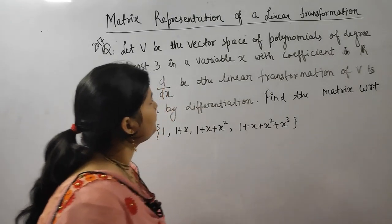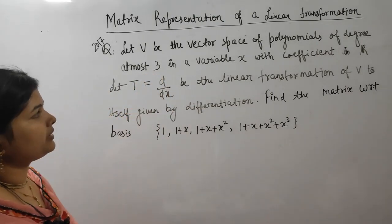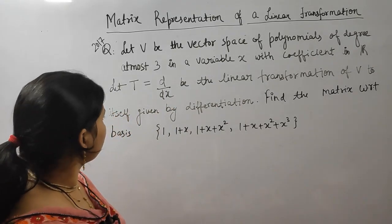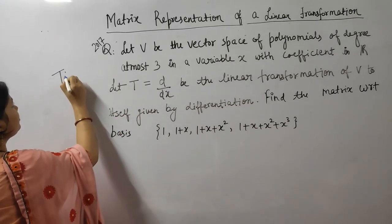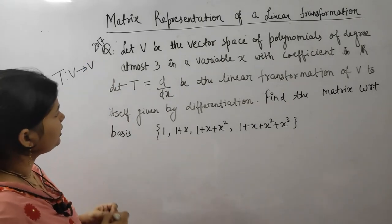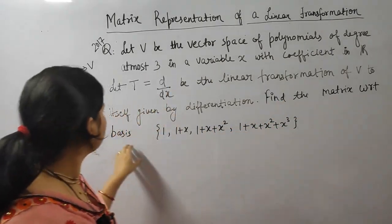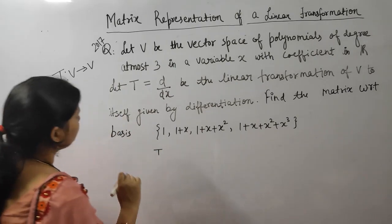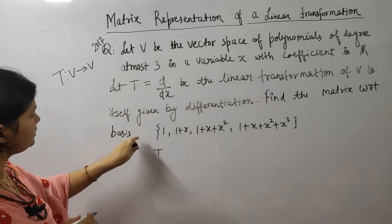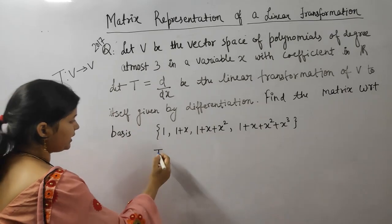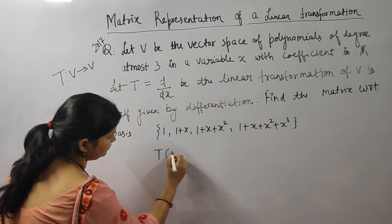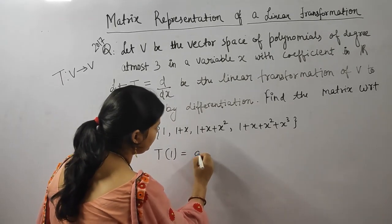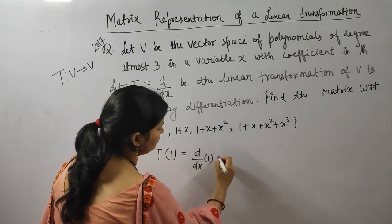Let V be a vector space of polynomials of degree at most 3 in variable x with coefficients in R, where T = d/dx is a linear transformation from V to itself, defined by differentiation. Find the matrix with respect to the given basis. Since T is from V to V, this is the standard basis for both.